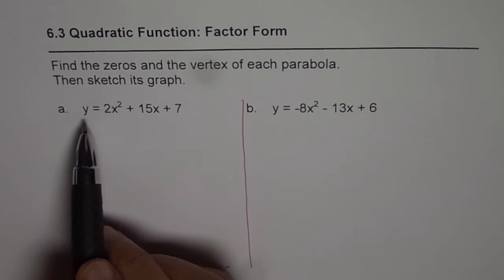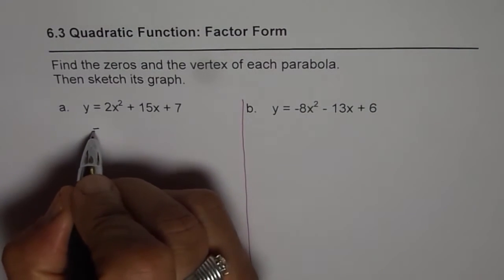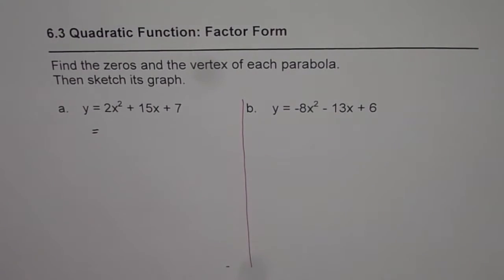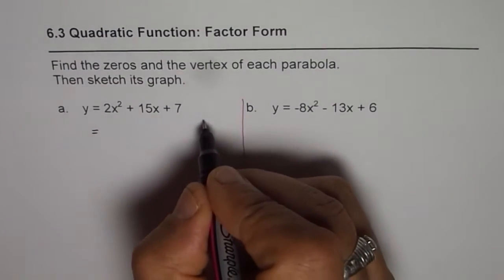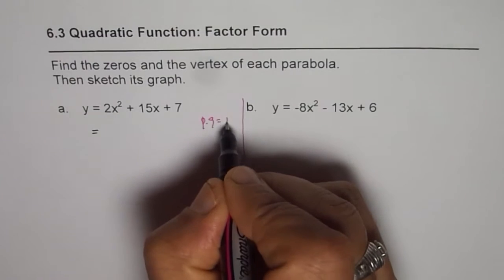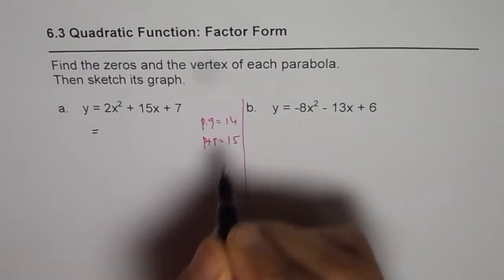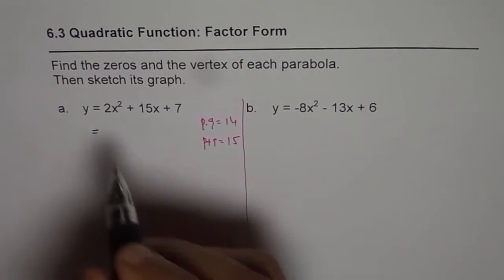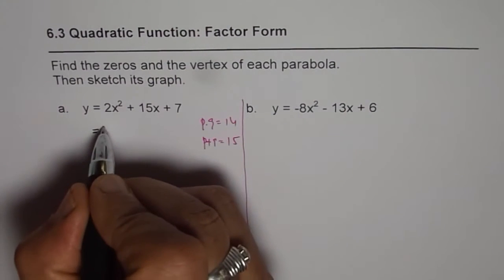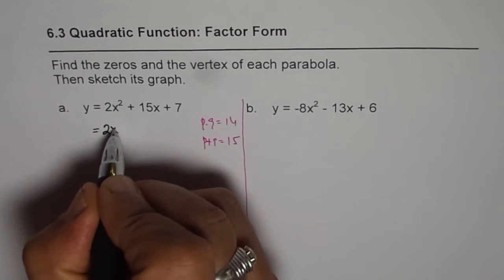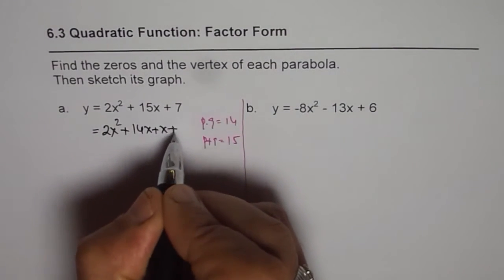The first one is y equals 2x squared plus 15x plus 7. To factor this, we are looking for two numbers whose product is 7 times 2, so p times q equals 14, and whose sum is 15. The two numbers are 14 and 1, so we can write 15 as a combination of 14 and 1. We rewrite as 2x squared plus 14x plus x plus 7.